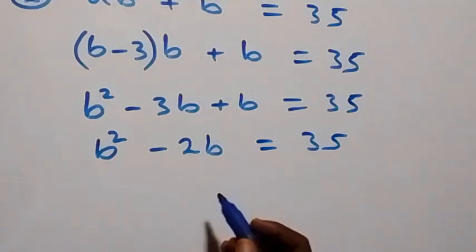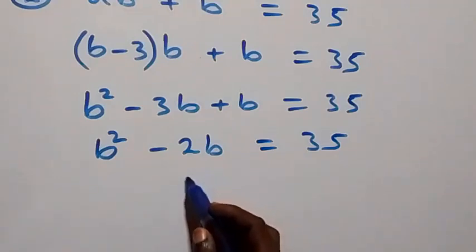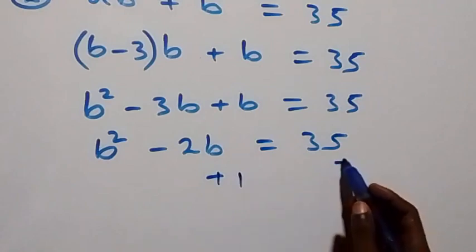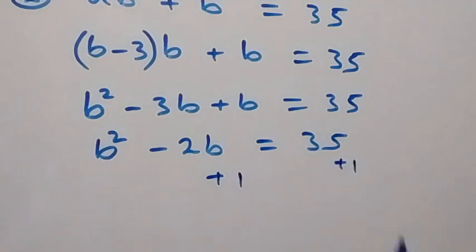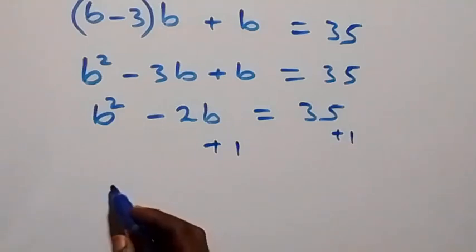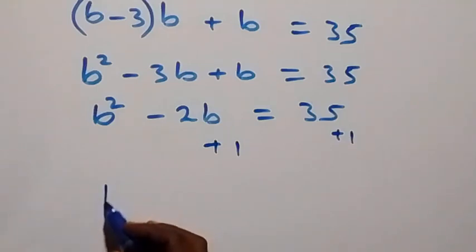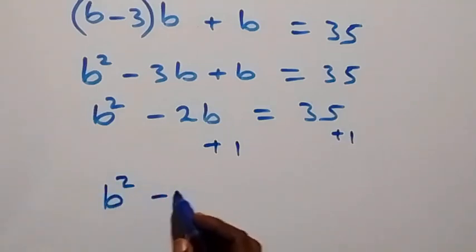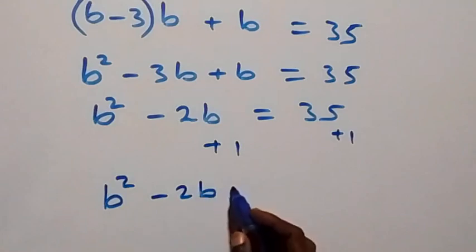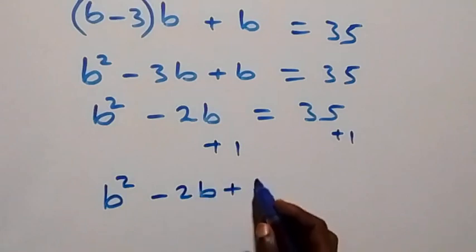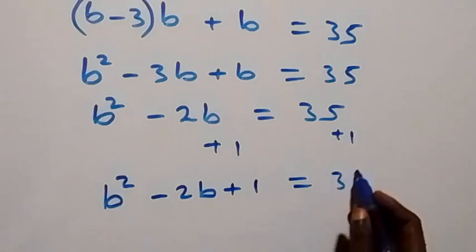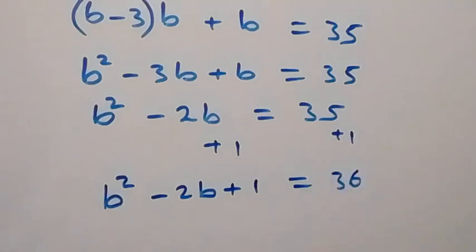Let's add 1 to both sides: add 1 on the left side and also add 1 on the right side. This gives us b squared minus 2b plus 1 equals 36.